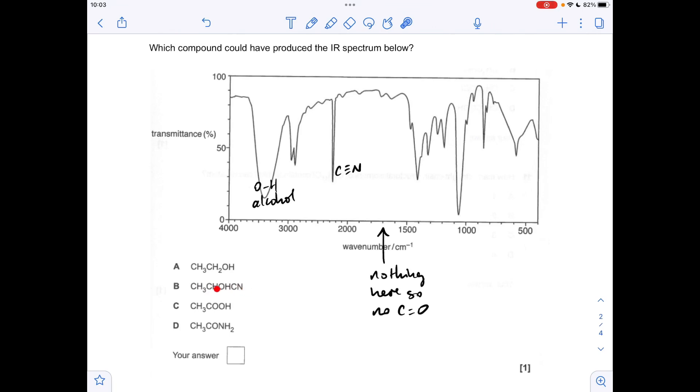It's B, so this is a hydroxynitrile. Obviously it's got the OH of an alcohol and the CN of the nitrile group.